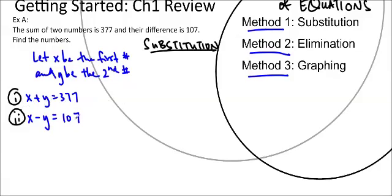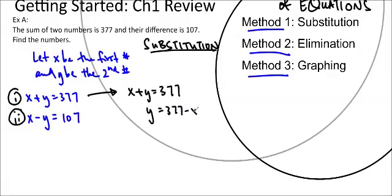So x plus y equals 377, and x minus y equals 107. For substitution, we isolate one variable and substitute into the other. Taking the first equation, we get y equals 377 minus x. Then we'll substitute y equals 377 minus x into the second equation.